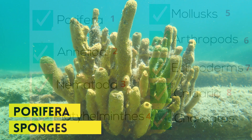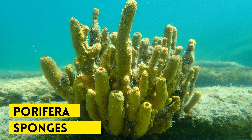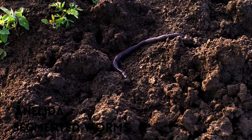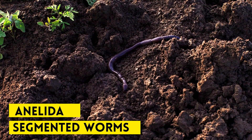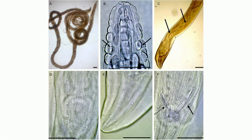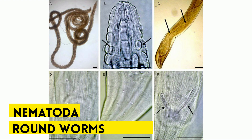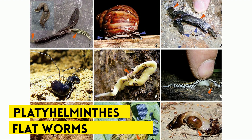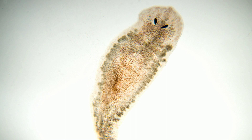Up first, phylum Porifera — the sponges. The next is phylum Annelida. These are segmented worms like earthworms and leeches. Next we have phylum Nematoda, and these are the roundworms. Next, phylum Platyhelminthes, and these are flatworms. Examples include planaria and tapeworms.